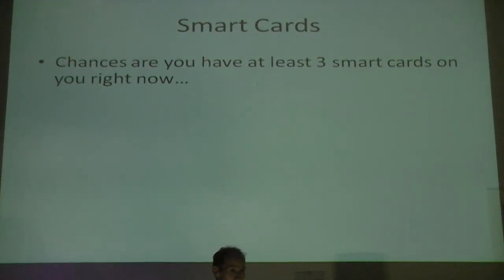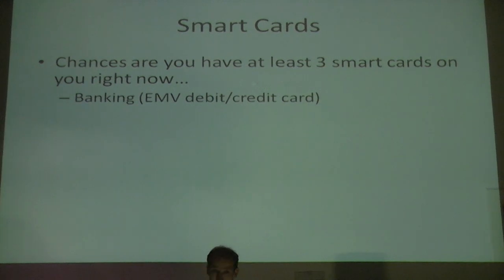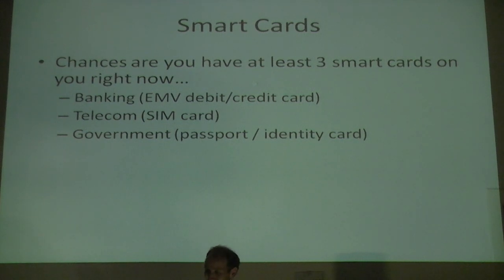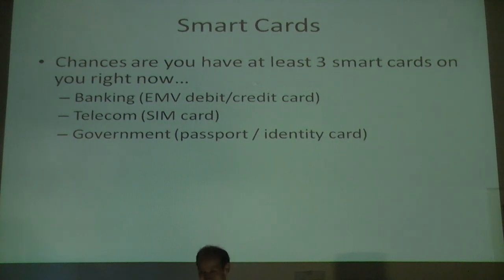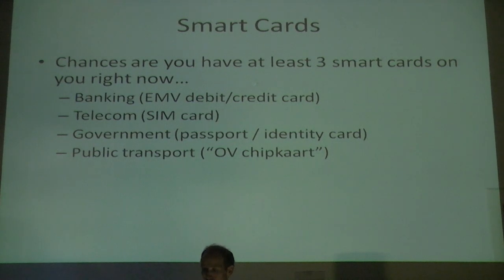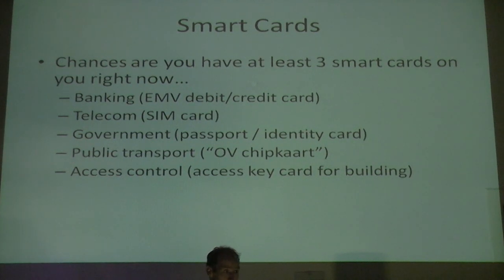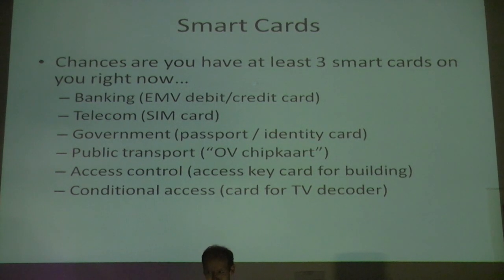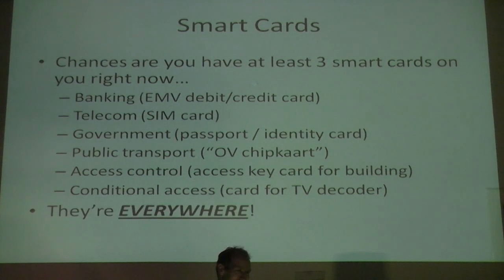Chances are that you have a smart card on you — in fact, perhaps as many as three. Your banking card will be a smart card; it contains a chip these days. Your SIM card within your mobile phone will be a smart card. If you have a Dutch identity card, it will contain a chip. Your public transport card or OV-chip card will be a smart card. Maybe you have an access control card for your building. If you have a cable or satellite decoder, that will contain a smart card. They're everywhere.